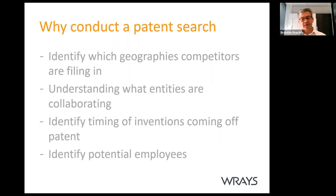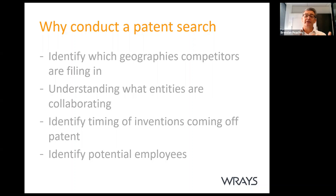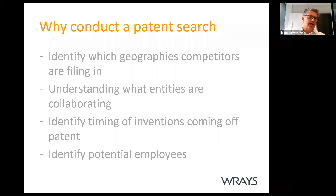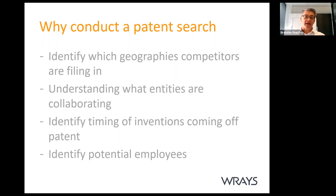Patent searches give you really good information about what your competitors are doing. Patents are country-by-country — you can't get a global patent — so there are stages in the patenting process where you choose which countries to file in. When you identify a patent that's a potential barrier to entry and that patentee has only filed in the US and Canada, theoretically that product may be available for you to pursue in Australia — though be careful, it isn't always that simple.